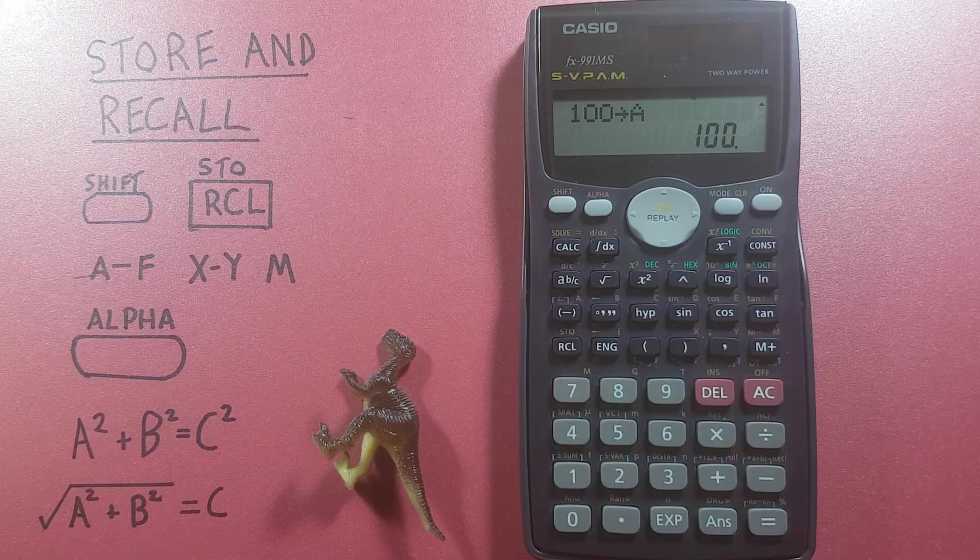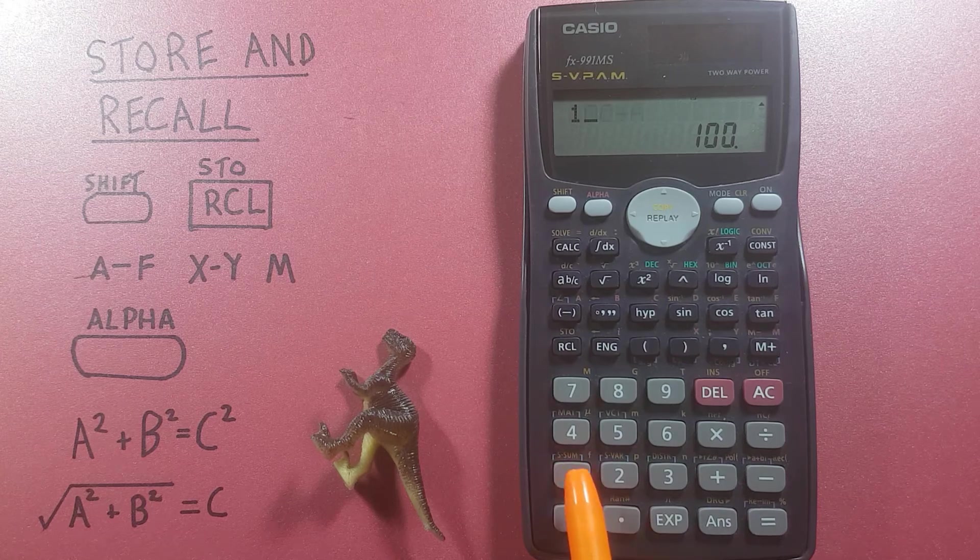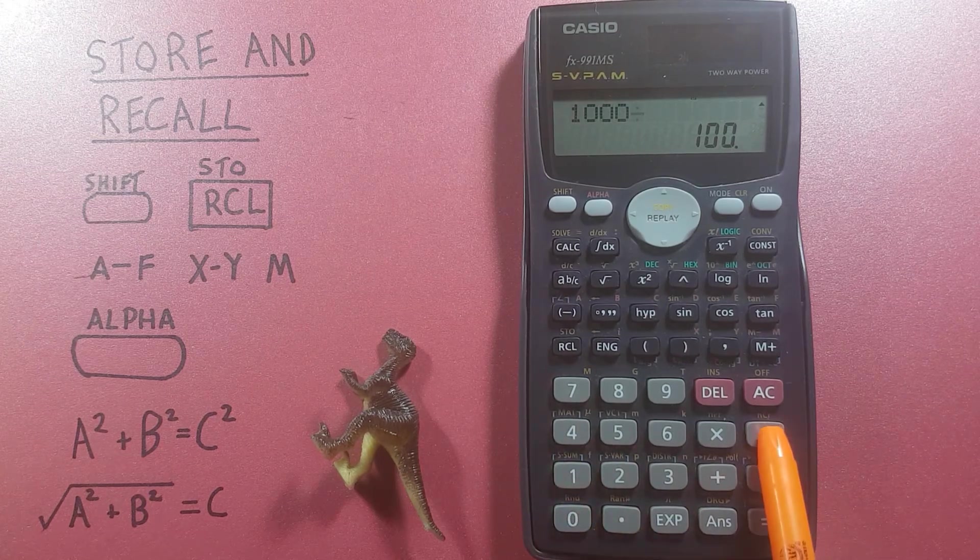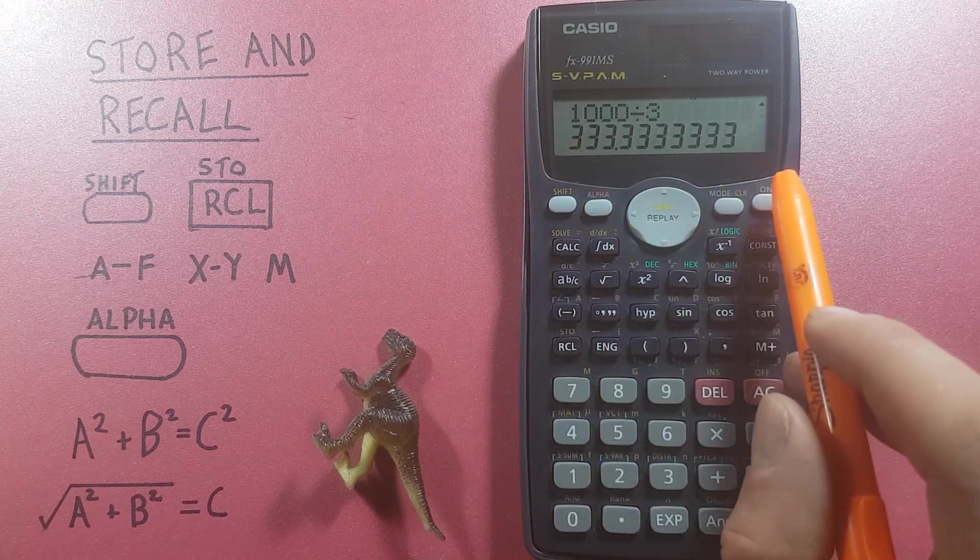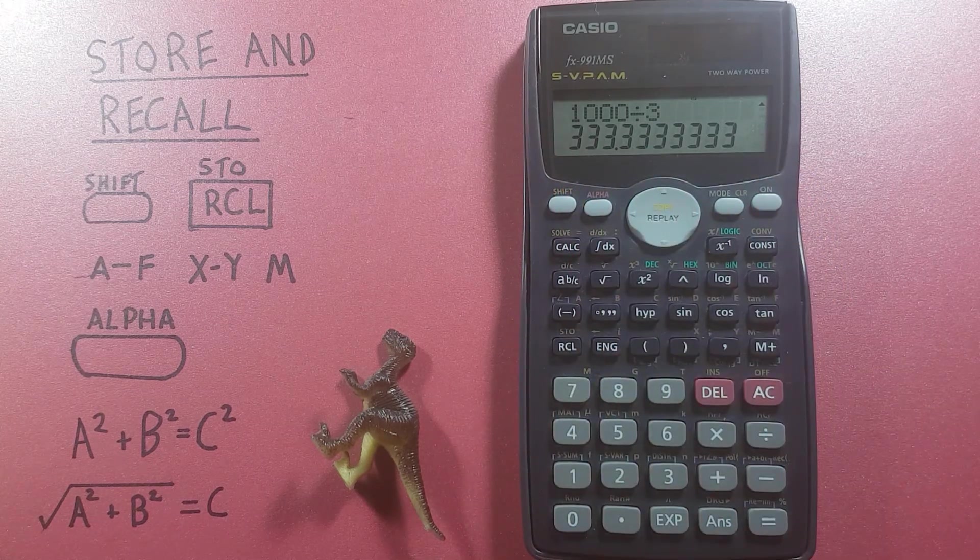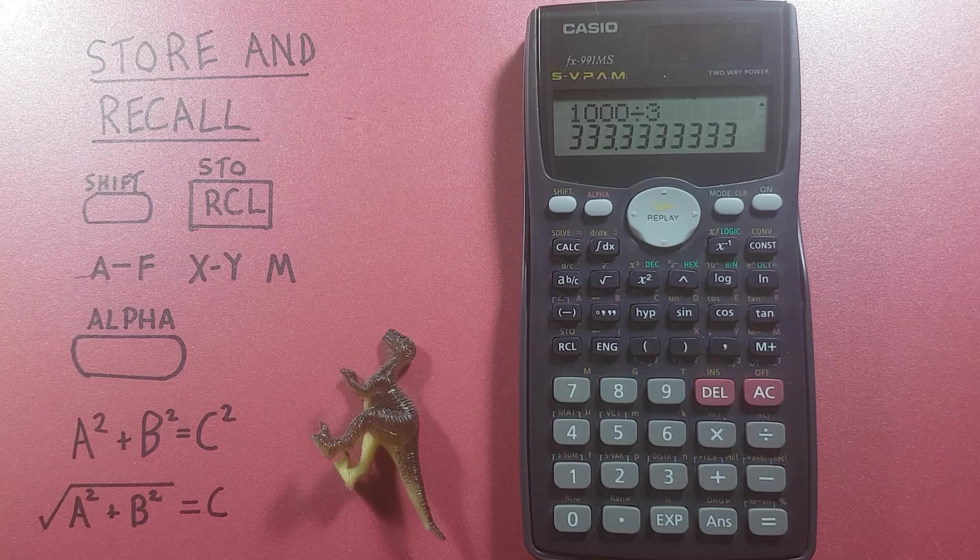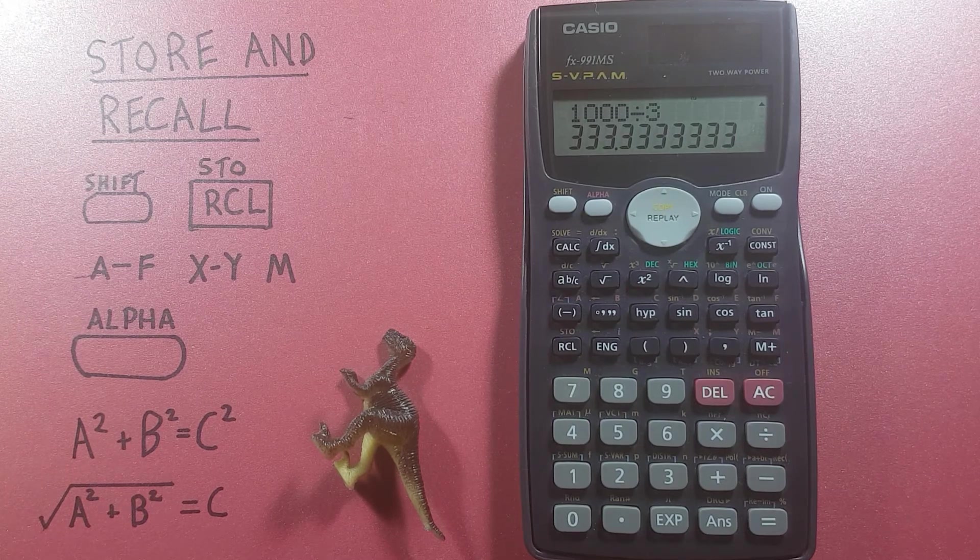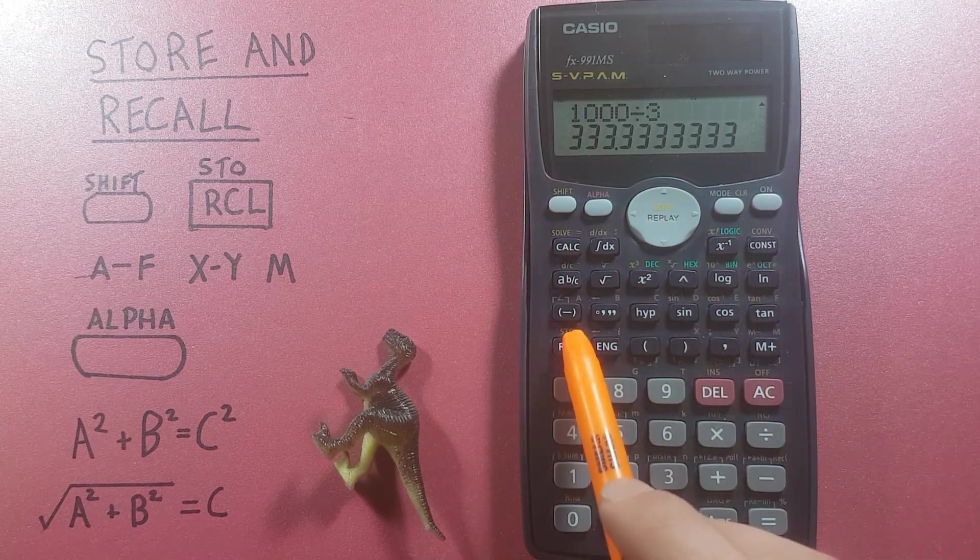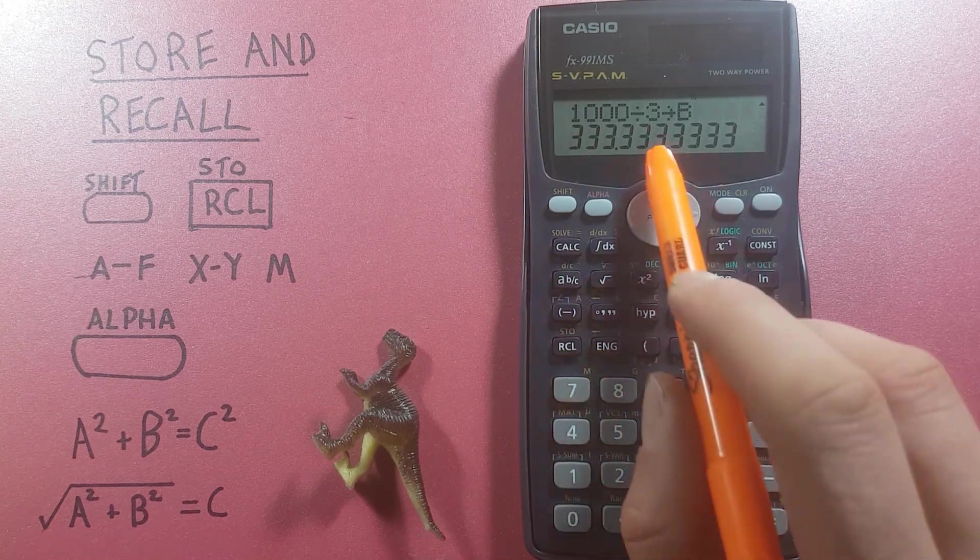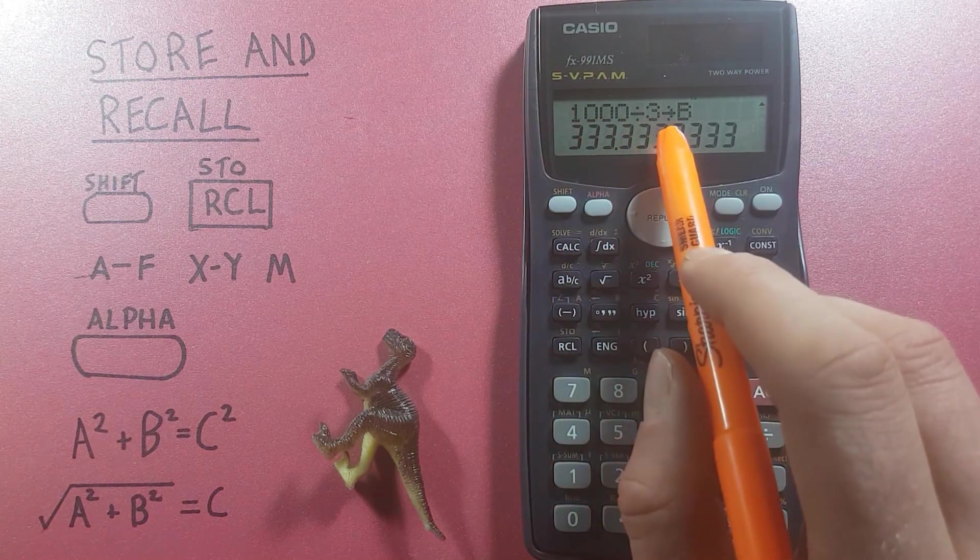You can also save the results of calculations. So if we had 1000 divided by 3 equals and we didn't want to take this out but we wanted to save it into our calculator memory, we would place it in the B slot. So shift store B, there we go, 1000 divided by 3 into B.